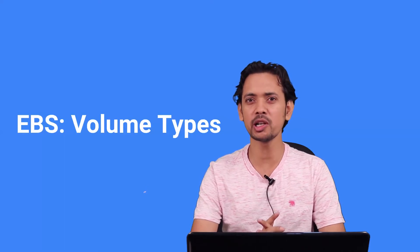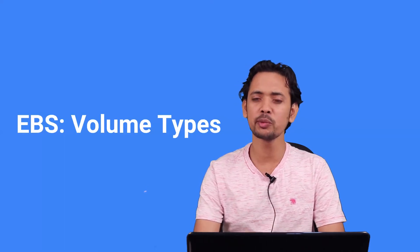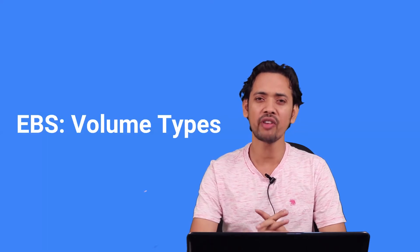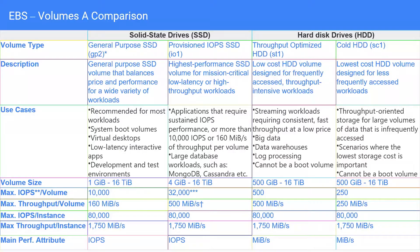AWS provides you multiple volume types — it provides five types of volumes in total. We have general purpose volumes, provisioned IOPS, throughput optimized, cold HDD, and magnetic disks.